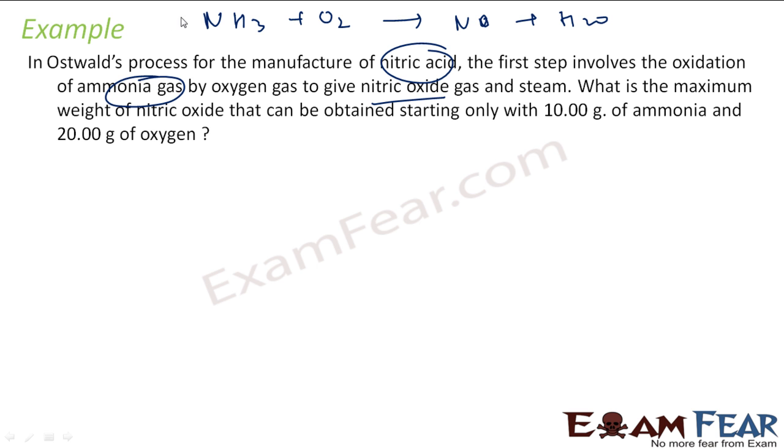And then the balanced reaction will be 4NH3 plus 5O2 gives 4NO plus 6H2O. In the interest of time, I am just using a balanced reaction.